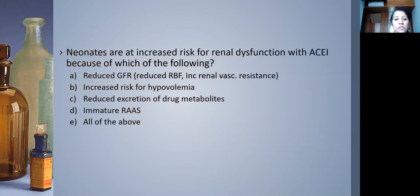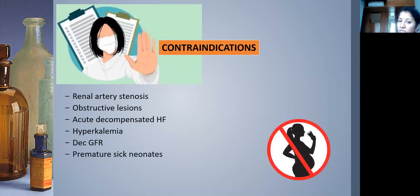Neonates are prone to renal dysfunction with ACE inhibitors because they have reduced GFR, are at increased risk of hypovolemia, have reduced drug metabolite excretion, and have an immature renin-aldosterone system. Contraindications include renal artery stenosis, obstructive cardiac lesions, acute decompensated heart failure, hyperkalemia, decreased GFR, premature sick neonates, and pregnancy — as ACE inhibitors are teratogenic.